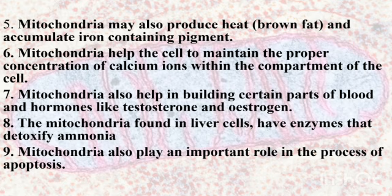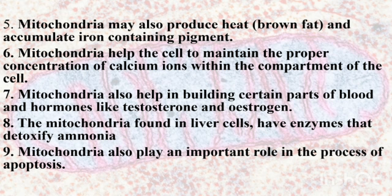Mitochondria may also produce heat and accumulate iron-containing pigment in the cell. Mitochondria help the cell to maintain the proper concentration of calcium ions within the compartments of the cell. Mitochondria also help in building certain parts of blood and hormones like testosterone and estrogen in the reproductive organs. The mitochondria found in liver cells have enzymes that detoxify ammonia. Mitochondria also play an important role in apoptosis, which is cell death.